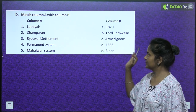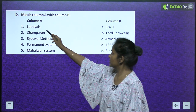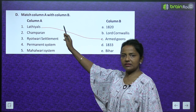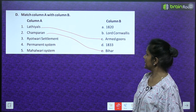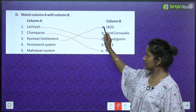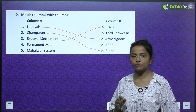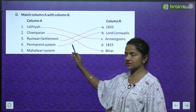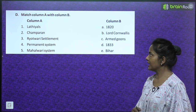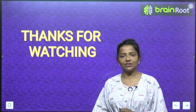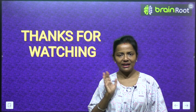Match column A with column B: Lathials were armed goons. Champaran is in Bihar. The Raitwari Settlement was introduced in 1820. The Permanent Settlement was introduced by Lord Cornwallis. The Mahalwari System was introduced in 1833. I hope you have understood this chapter very well. We will meet again with a new chapter — something new, something more interesting. Till then, be happy, stay blessed. Bye, and thanks for watching the video.